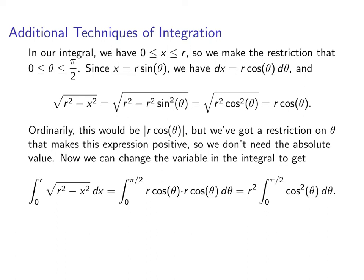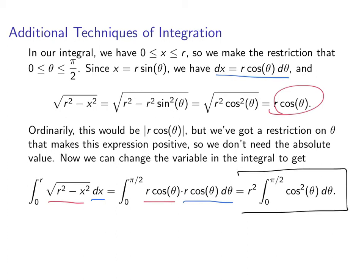Alright, so now we're going to change the variable in our integral. The square root of r squared minus x squared turns into r cosine theta, and dx turns into r cosine theta d theta. For the limits of integration, when x equals 0, theta equals 0; when x equals r, theta equals pi over 2. So when we clean that up, we get r squared times the integral from 0 to pi over 2 of cosine squared theta d theta. We can pull the r squared out because our variable of integration is theta.